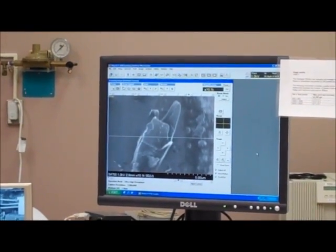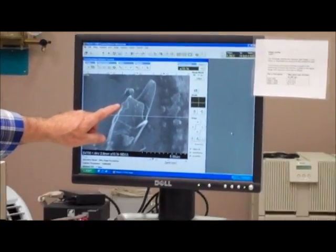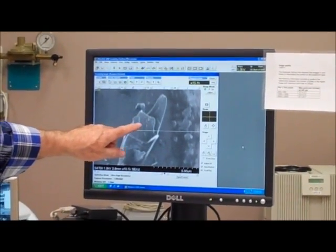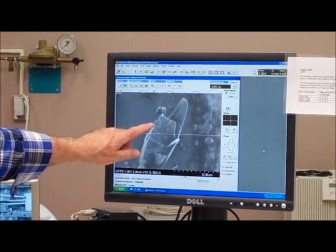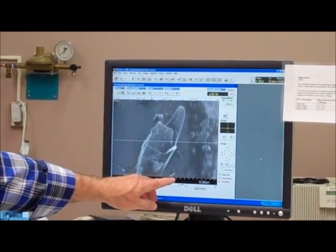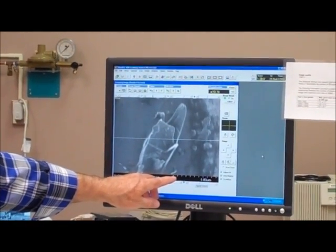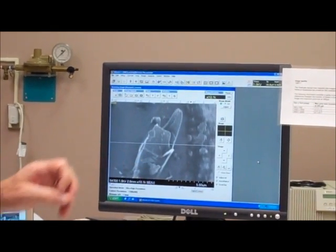So then if you look, for instance, at this feature right here, this little square piece, is about 50, about 50 nanometers.